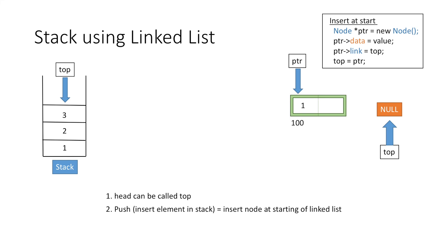We will make the link part of the node equal to top, that is null, as it is the first node being inserted into the linked list. And finally we will make top equal to ptr, so top is now pointing to the newly created node.